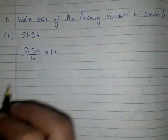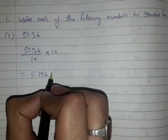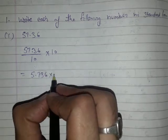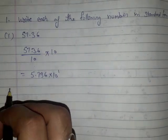So if you divide this number by 10, it will come to 5.736 times 10. And 10 you can write as 10 raised to the power 1. So this is the answer of the first part.